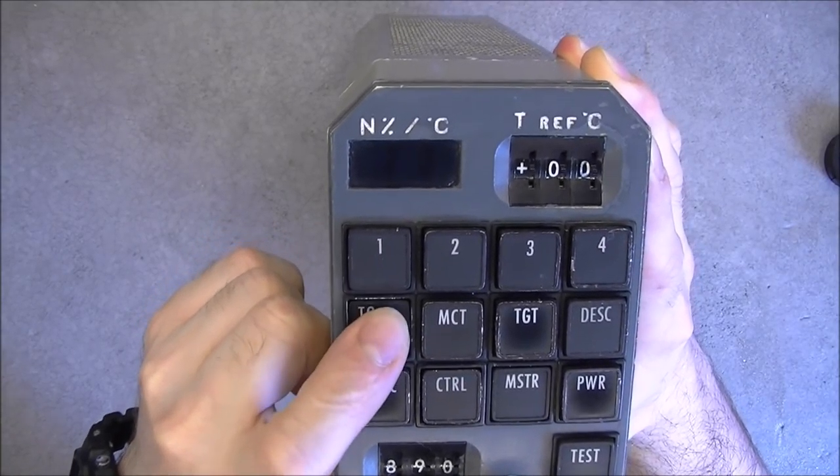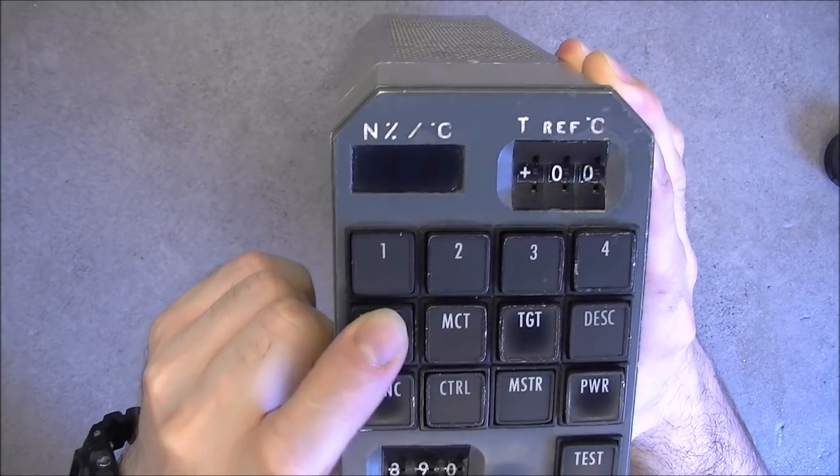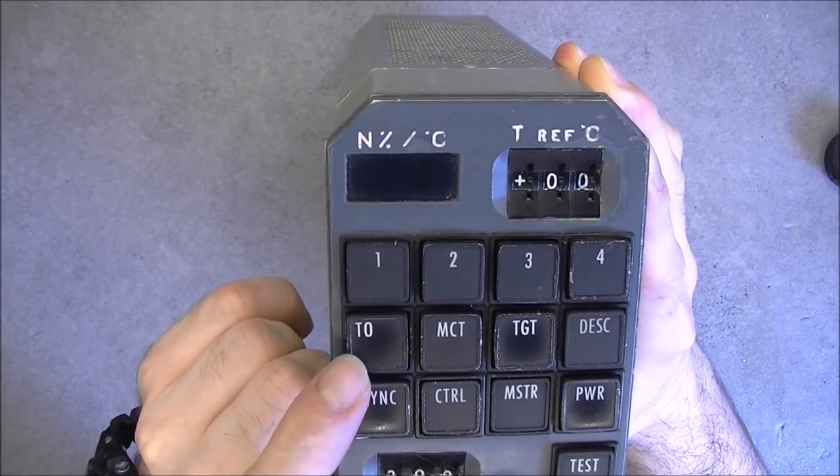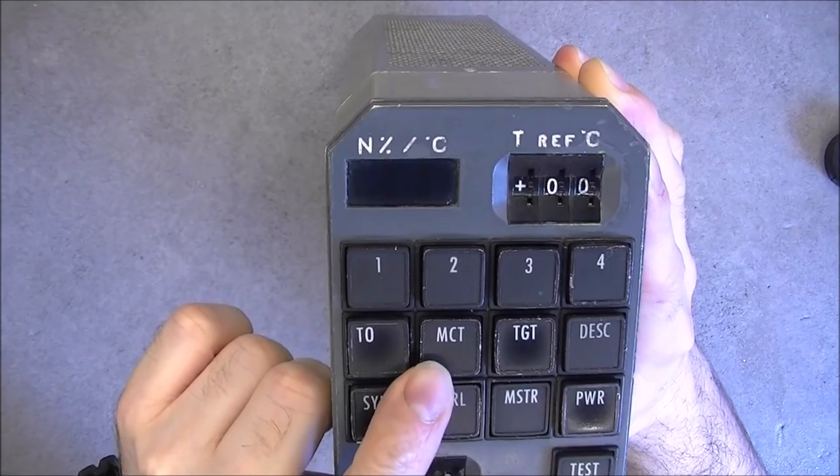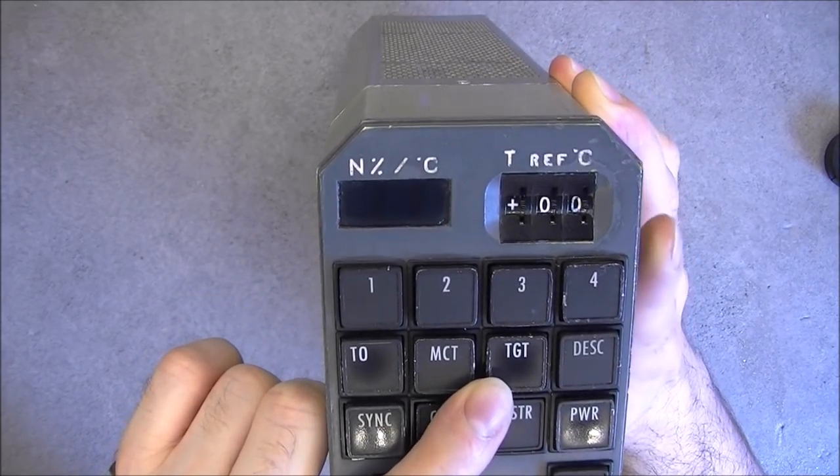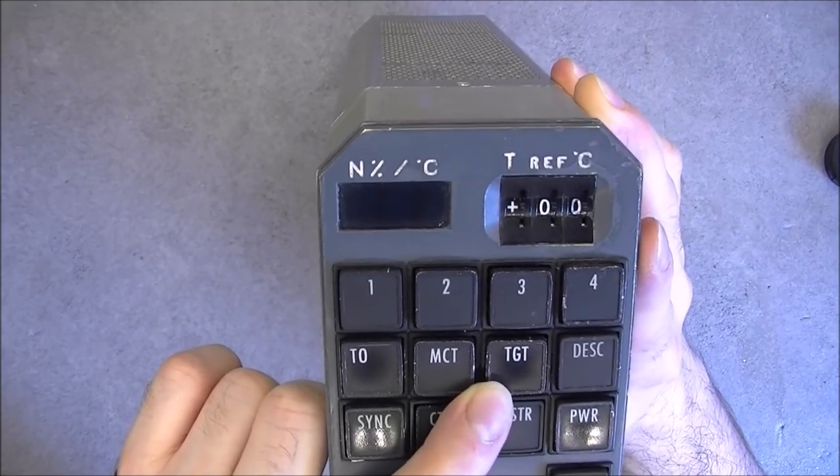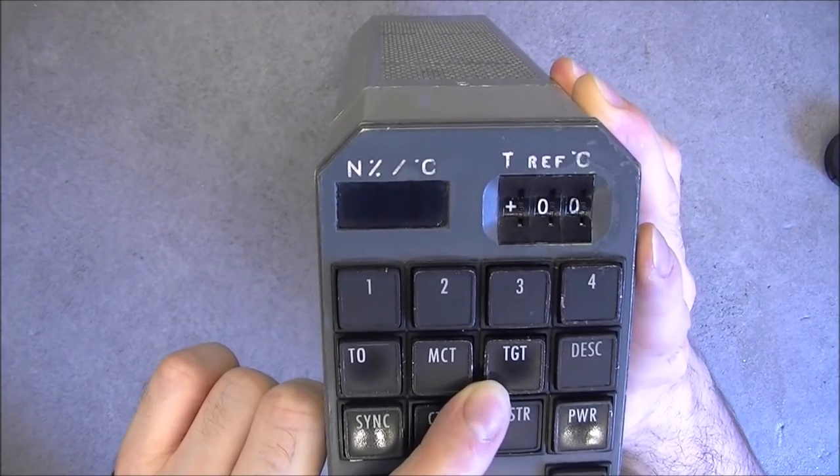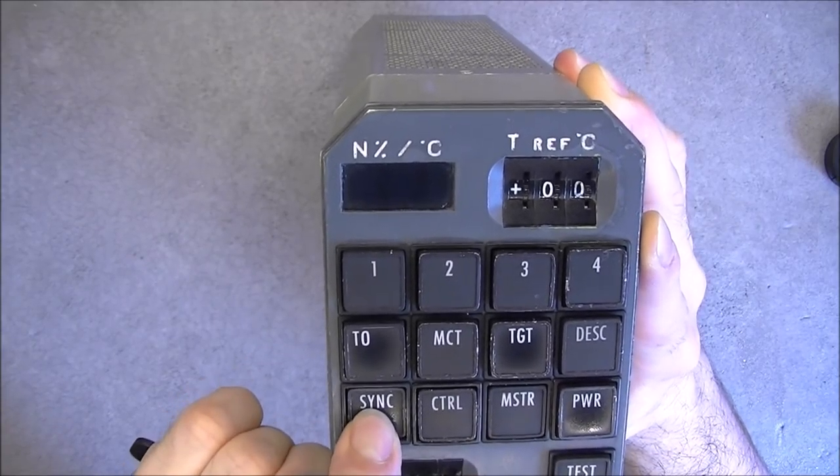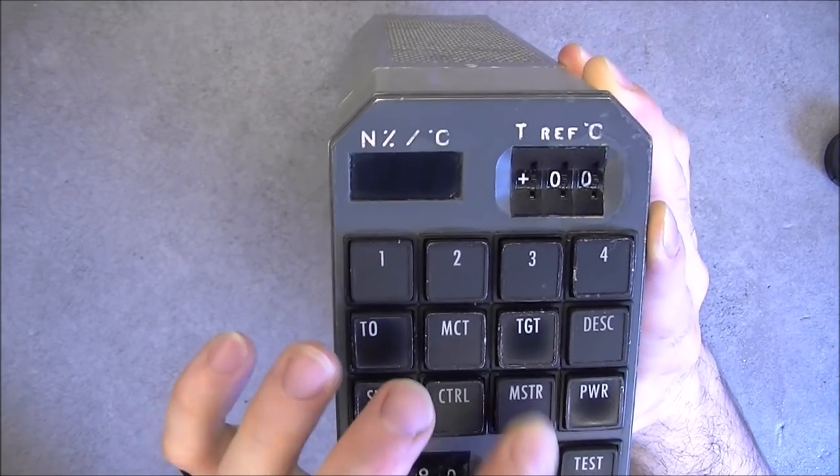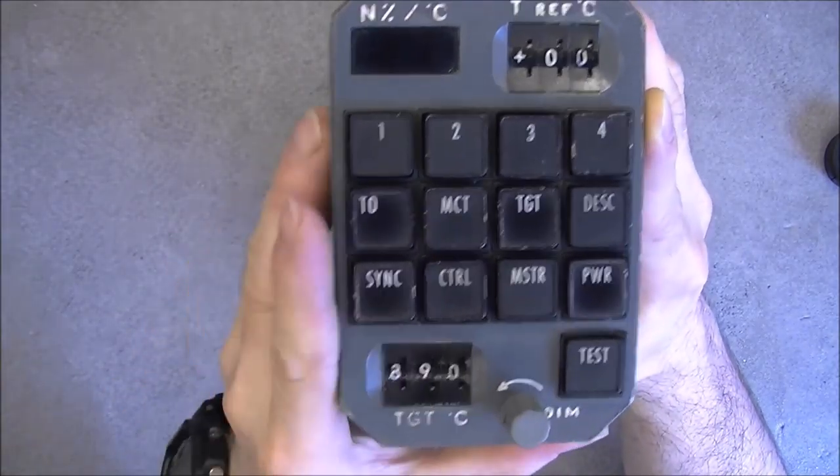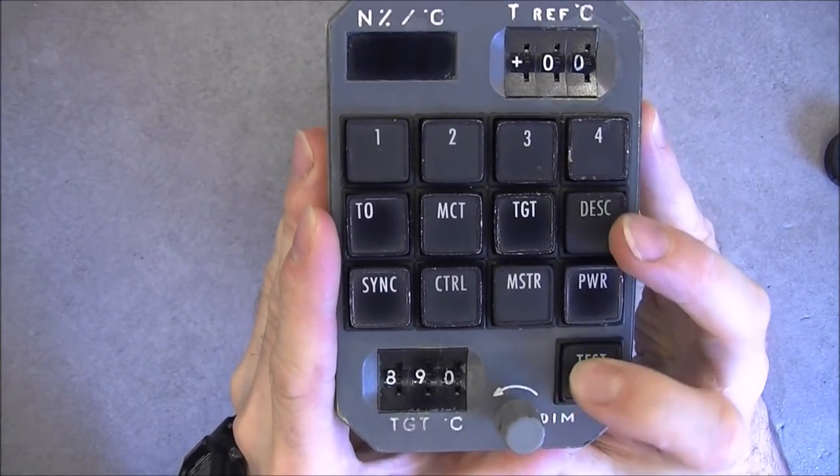Here we have also momentary buttons, but with a longer course to them. Maybe it is takeoff, MCT (no idea), TGT (either target or turbine gas temperature), descent probably, synchronized, control, master, power are lock buttons. And we have also test.